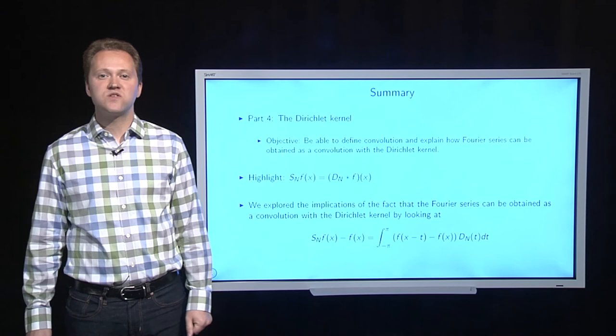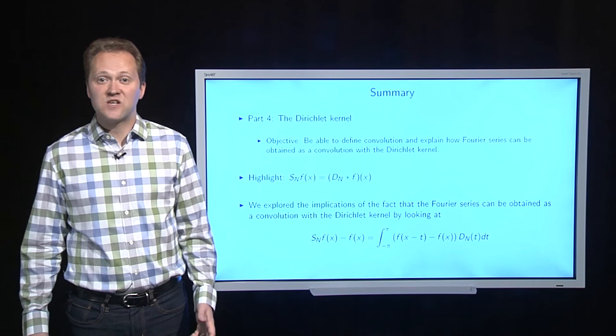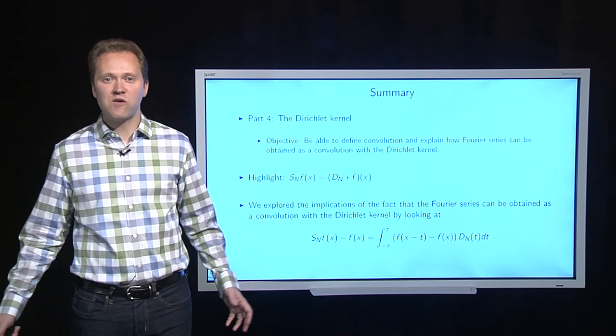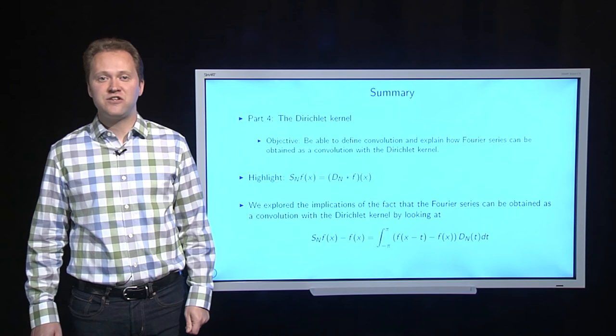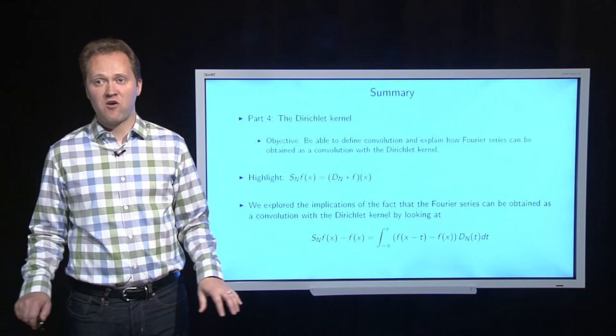So this part four was on the Dirichlet kernel, where the objective was to be able to define convolution and explain how Fourier series can be obtained as convolution with the Dirichlet kernel. The highlight was the formula that we saw that the partial sums for the Fourier series were, in fact, the Dirichlet kernel convolved with f. And then we explored the implications of that, in particular, how the Dirichlet kernel sort of spikes up and de-emphasizes values that are far away from zero as n goes really large.